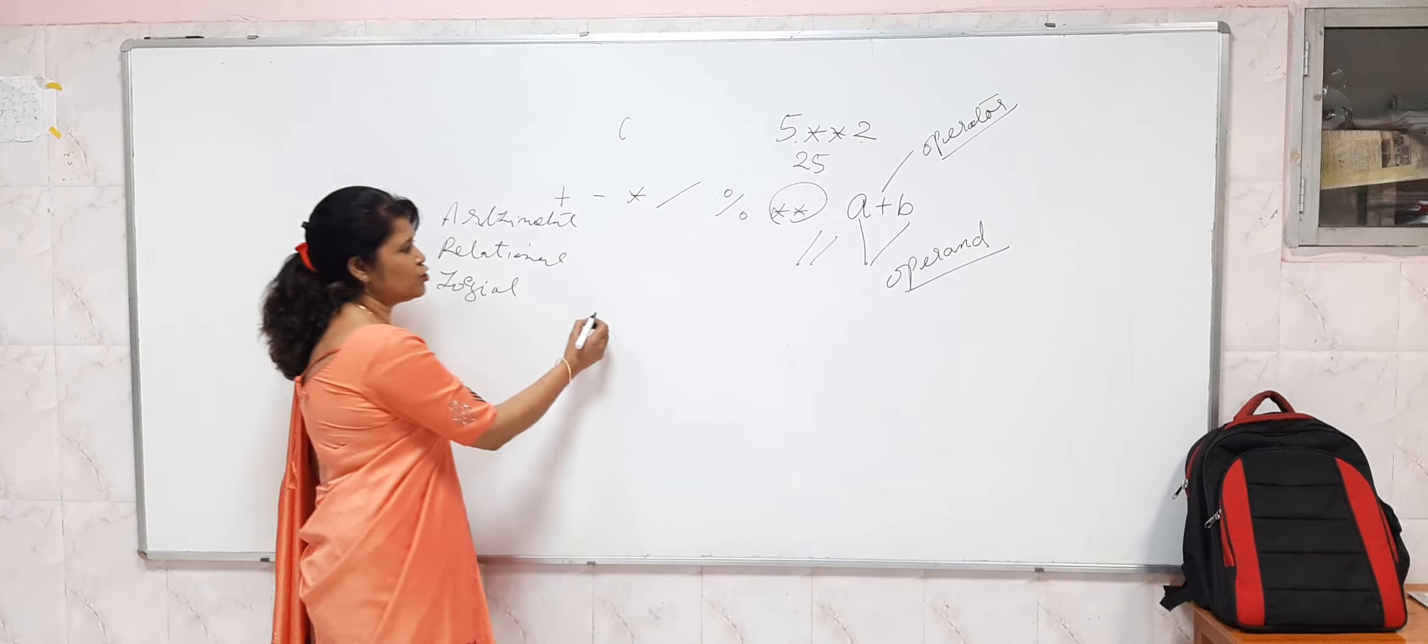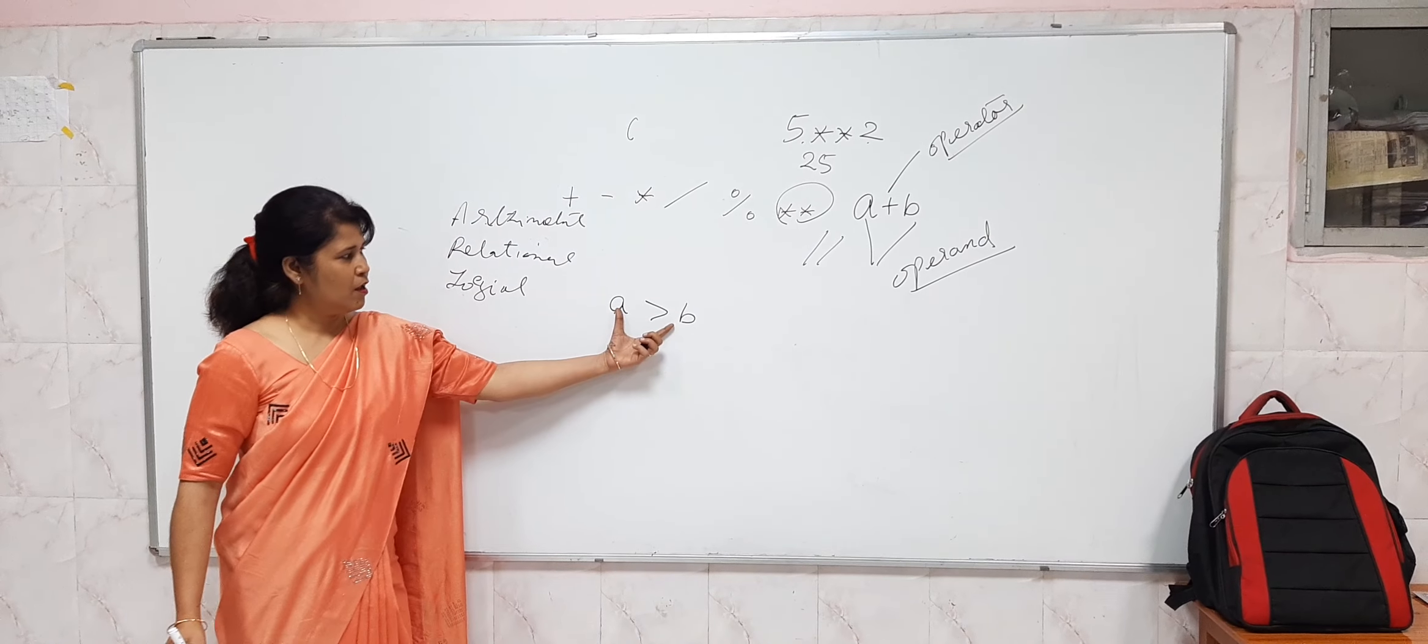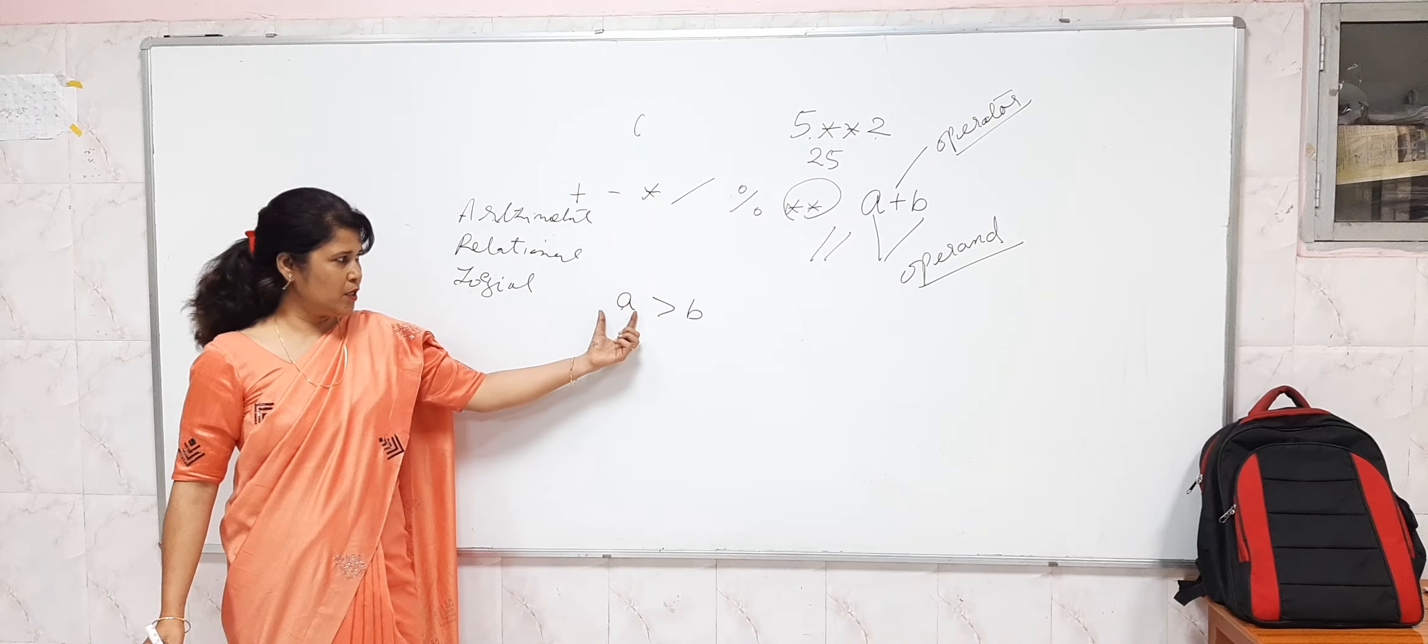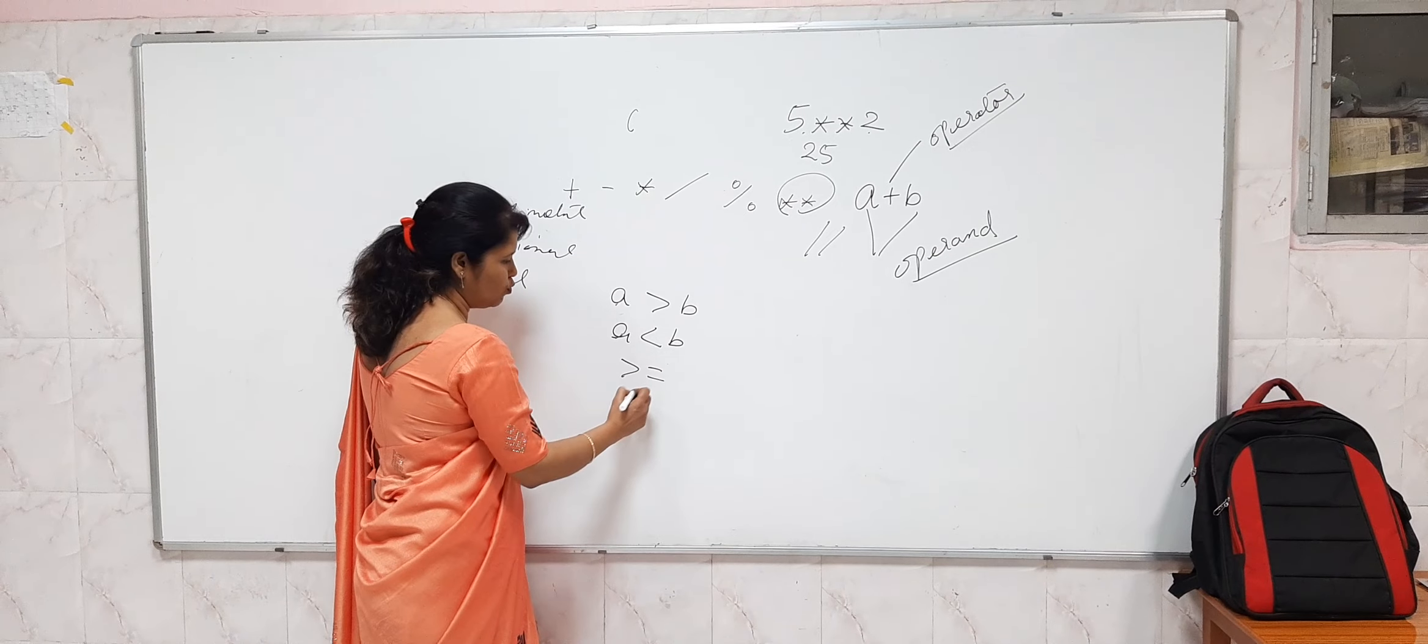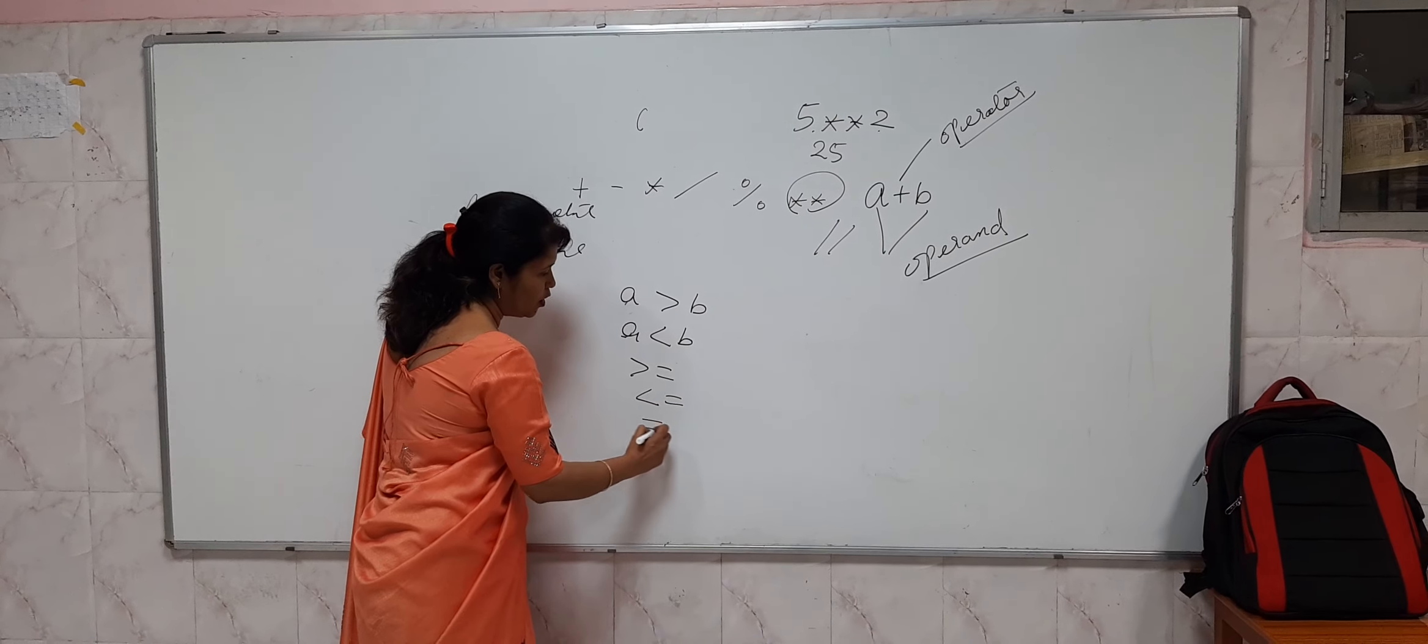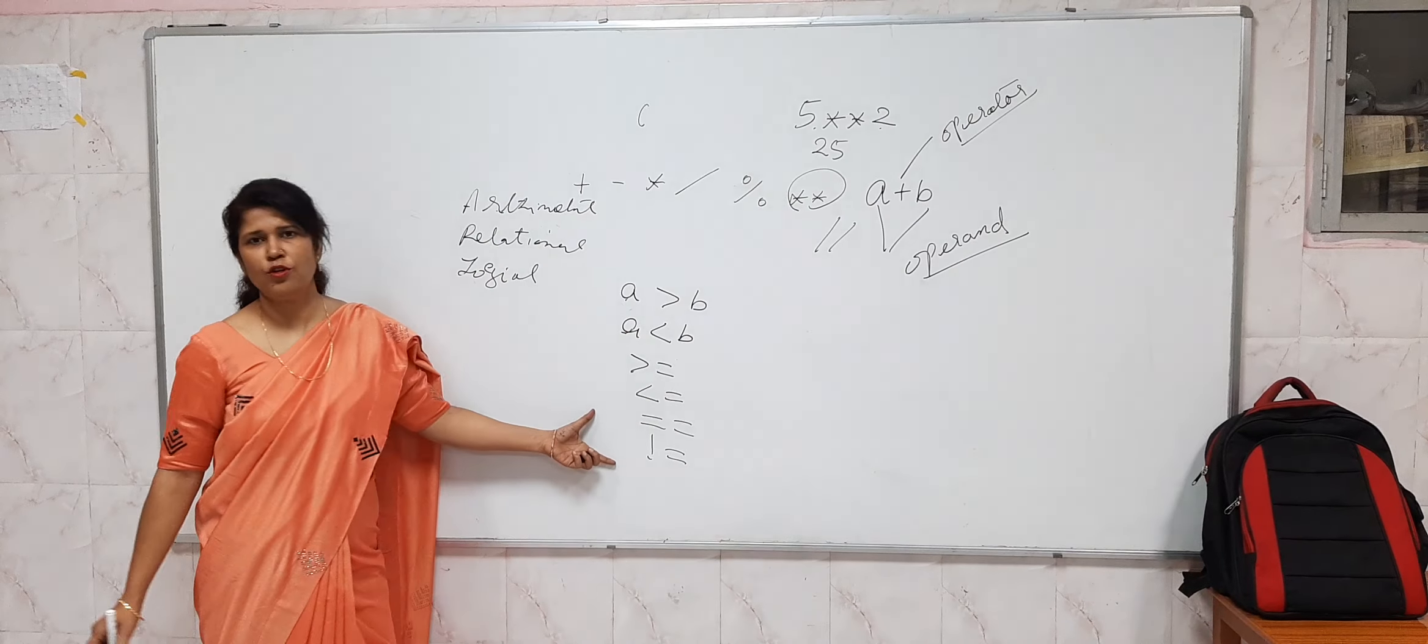Then we have relational operators which compare two operands and check the relation between them. A is greater than B, A is less than B, greater than or equal to, less than or equal to, equal to, and not equal to. These are all relational operators.